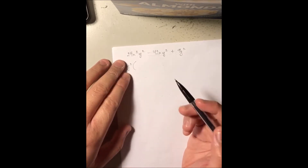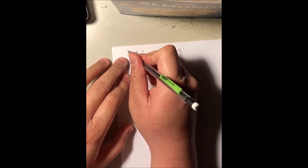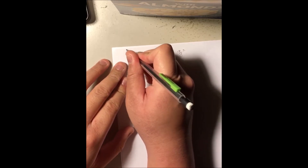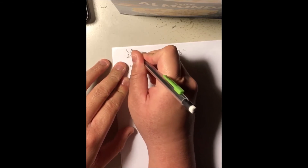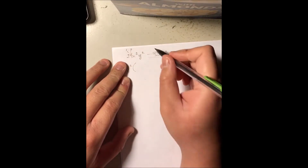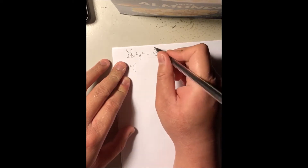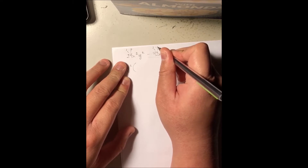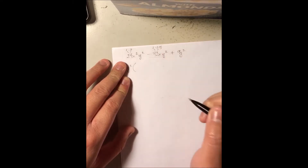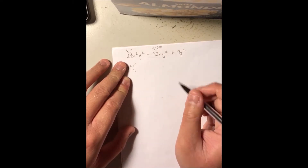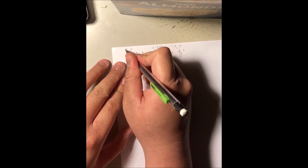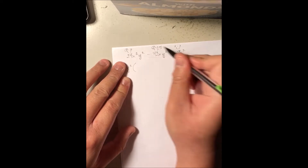Is there a largest possible common factor of all three coefficients? Well, 24 is 3 times 8; 42 is 3 times negative 14; and positive 9 is 3 times 3. We have the largest common factor of 3.